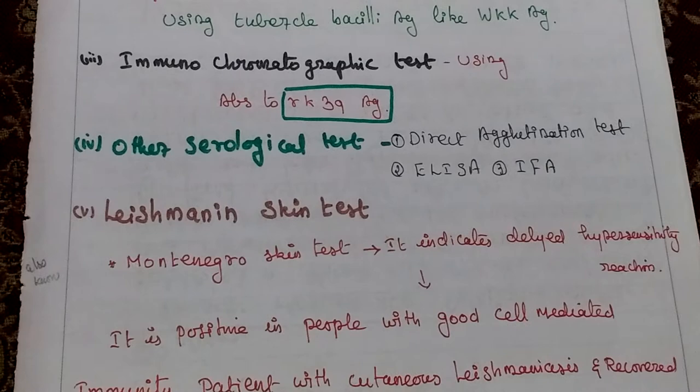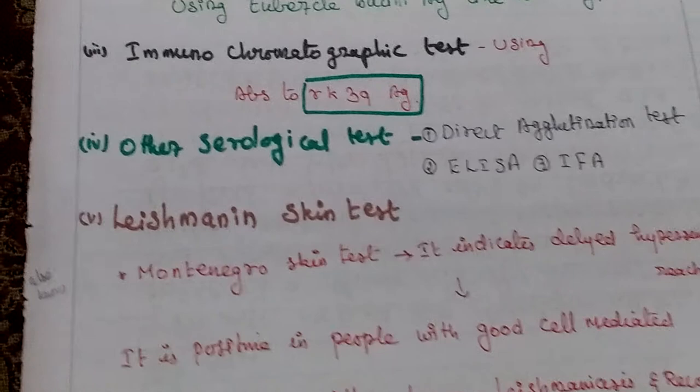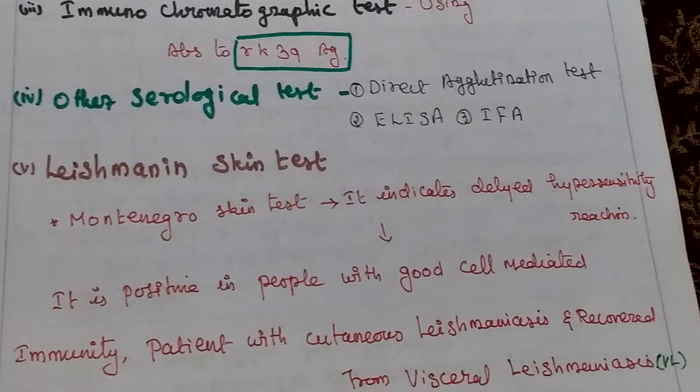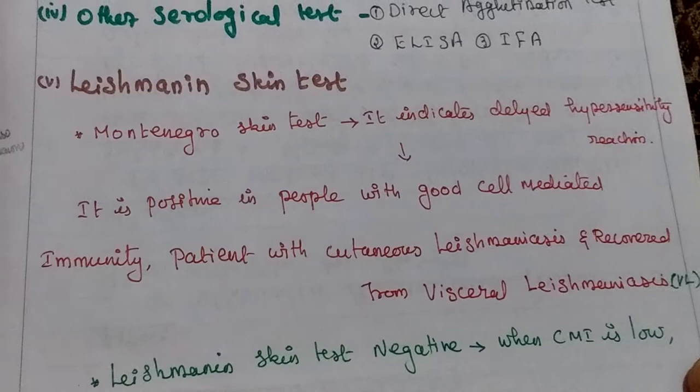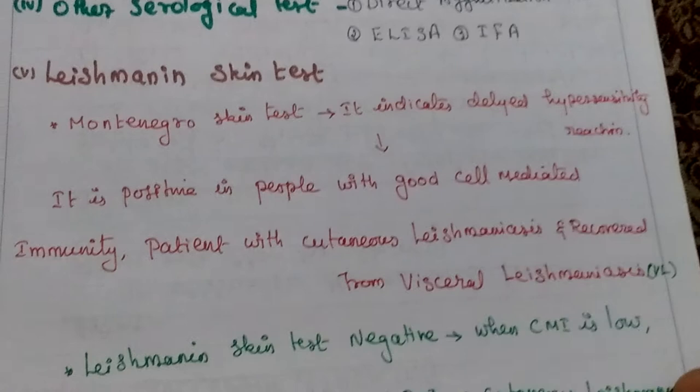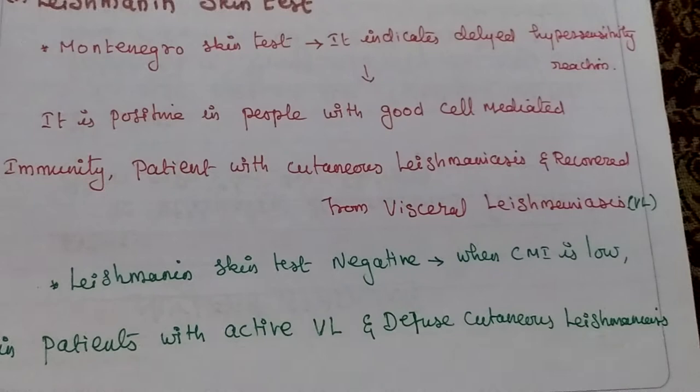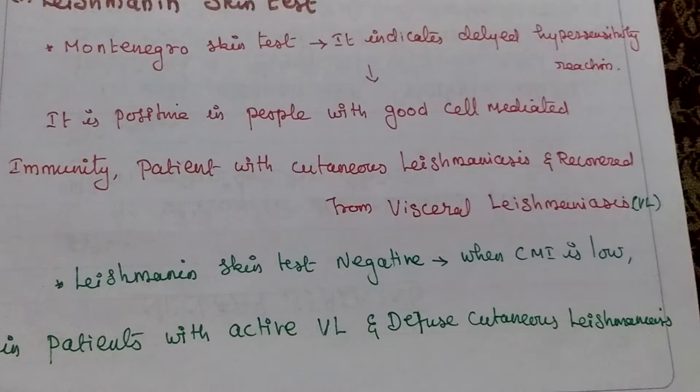The leishmanin skin test is otherwise called the Montenegro skin test. It indicates delayed hypersensitivity reaction. A positive test means the person has good cell-mediated immunity — seen in patients with cutaneous leishmaniasis and those recovered from visceral leishmaniasis. A negative skin test means cell-mediated immunity is low — seen in patients with active visceral leishmaniasis and diffuse cutaneous leishmaniasis.